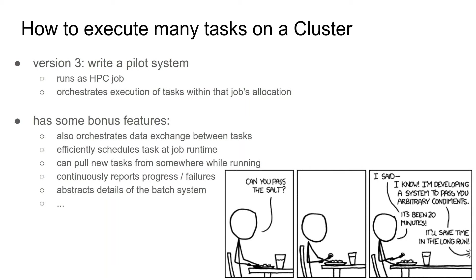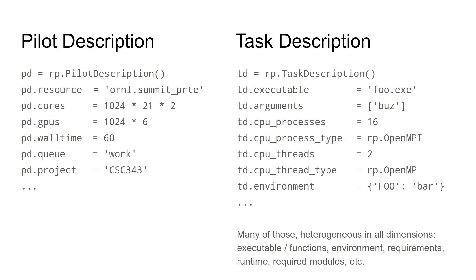Pilot systems do introduce a certain overhead in terms of software stack complexity. What you basically do when using a pilot system is separate the step of acquiring resources from the step of using those resources for task execution. Acquiring resources means you describe the pilot job — the job submitted to a certain cluster, a certain HPC machine — and the total number of cores, GPUs, and whatever you want to acquire. On the other hand, you have a series of task descriptions and potentially task dependencies, describing the specific applications you want to place on the acquired resources, their specific requirements, the environment you need, and the modules you need to load.